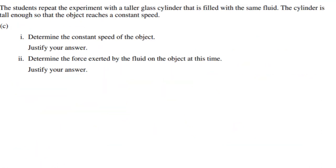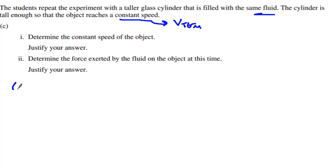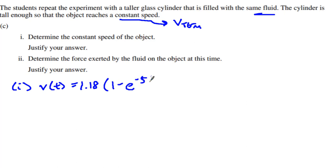We go to the end of this problem. The student repeats the experiment with a taller glass cylinder with the same fluid, but the cylinder is tall enough that the object reaches constant speed — what we like to call terminal velocity. C1 says: determine the constant speed of the object. It's hitting terminal velocity. Remember, my function was V(t) = 1.18 × (1 − e^(−5t)).